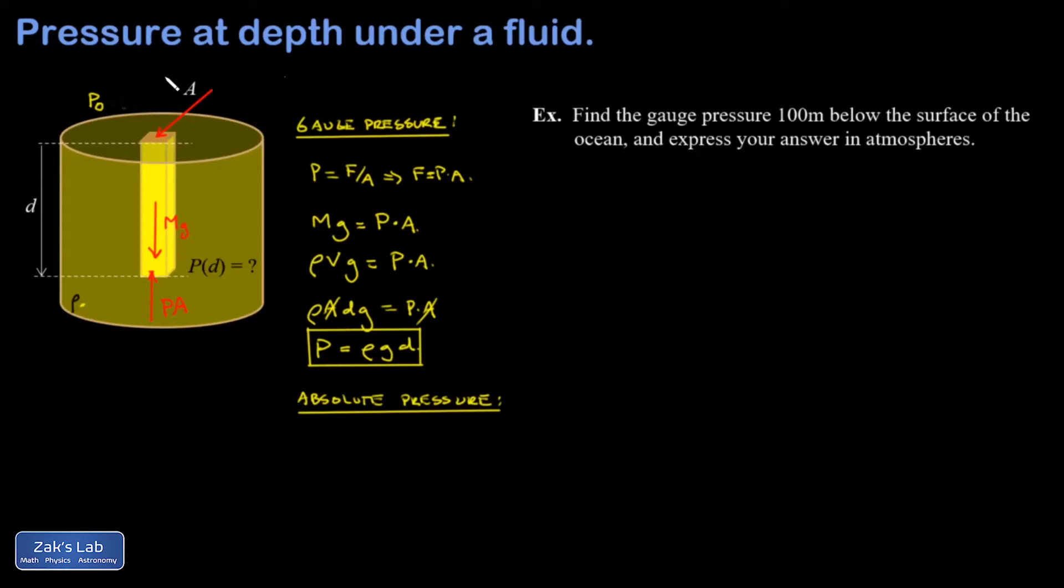So I can just correct my gauge pressure at depth by just adding the pressure at the surface. So I get P_absolute—I should probably put a g on the first one for gauge—so P_absolute is going to be whatever the pressure is at the surface plus ρgd. Just a minor correction.